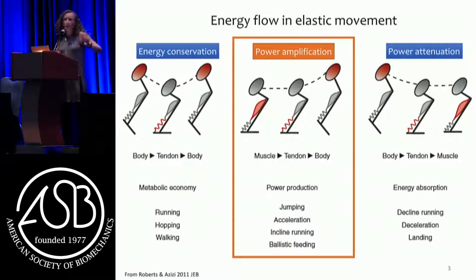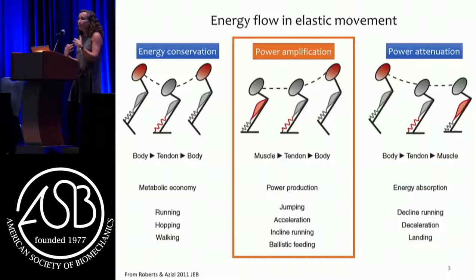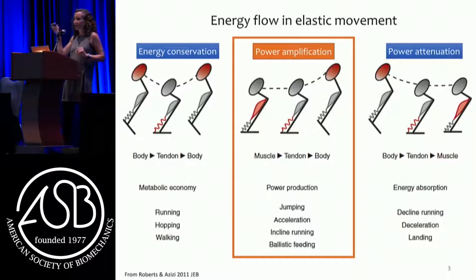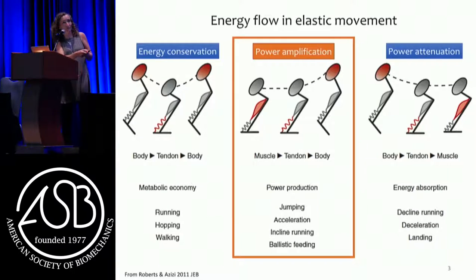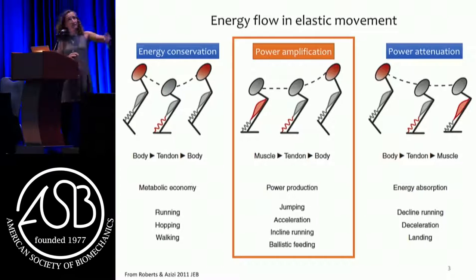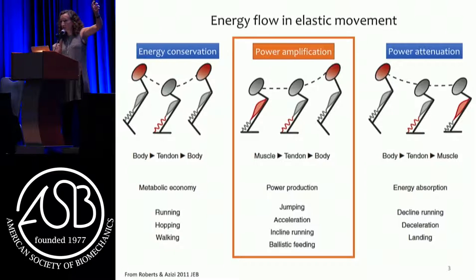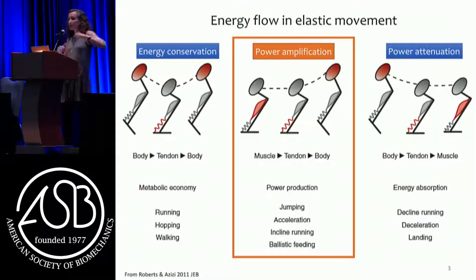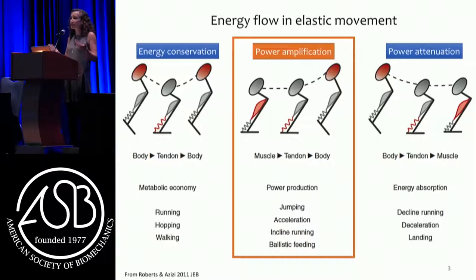One of my favorite ways that energy flow and elastic movement has been expressed in vertebrates was in a paper by Tom Roberts and Manny Azizi back in 2011. They split out the general categories in which elastic structures play a role. On the far left-hand side we can talk about energy conservation — the red color on screen is energy moving from the body to the spring and back to the body. We think about that in terms of metabolic economy: running, hopping, walking, cyclical, highly efficient motion.